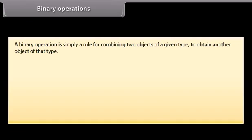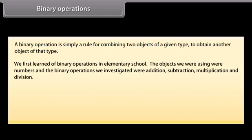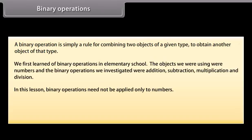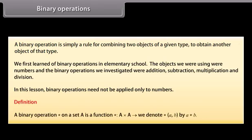Binary operations. A binary operation is simply a rule for combining two objects of a given type to obtain another object of that type. We first learned of binary operations in elementary school. The objects we were using were numbers and the binary operations we investigated were addition, subtraction, multiplication, and division. In this lesson, binary operations need not be applied only to numbers. Definition: A binary operation ★ on a set A is a function ★ from A cross A to A; we denote ★(a, b) by a ★ b.